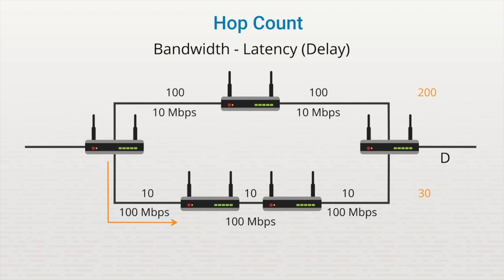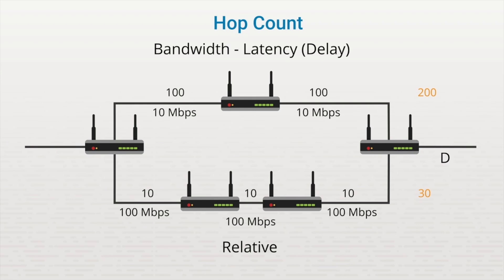These values assigned based on bandwidth or latency are typically identified by the routing protocol. For example, the routing protocol might say all 10 megabits per second links get a metric value of 100. There may be even more complex computations that take into account the delay when sending real traffic between two routers. The basic idea is that the routing protocol tries to calculate the bandwidth and delay and assigns the link a value that helps identify the best path. Another metric that can be used is a relative value. Every link might be assigned a default value, and an administrator could change these default values to manually control traffic flow. An administrator could modify the values on each link, increasing or decreasing them, to customize how data flows through the network. This relative value is often called a link cost.